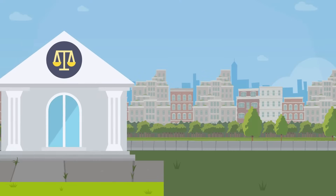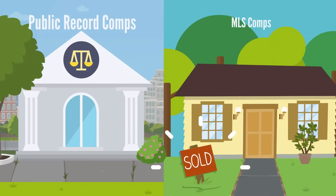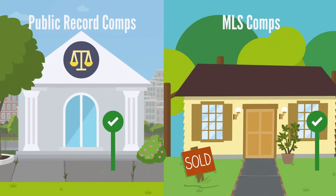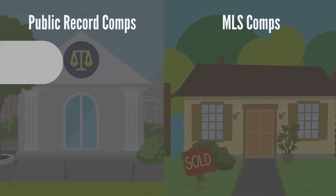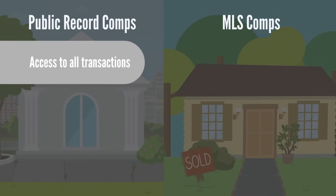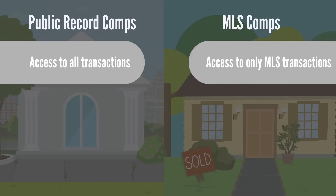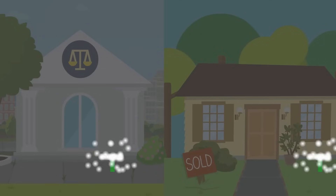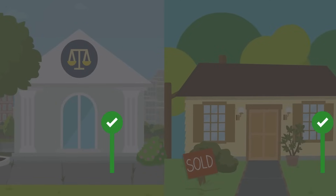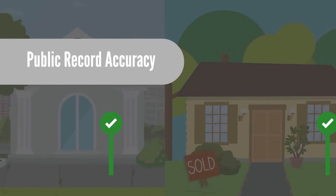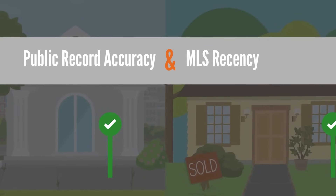You can choose to run comps with public record data, MLS data, or a combination of both. Public record sales provide access to all transactions, even ones that were never listed on the MLS. MLS data provides access to only what has been listed with an agent on the MLS. You can also use both datasets to combine the accuracy of public record data with the recency of MLS data.